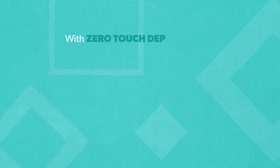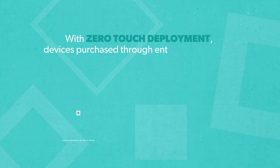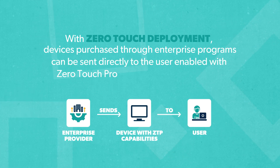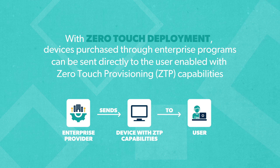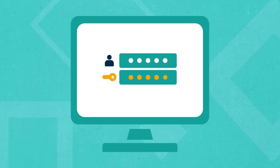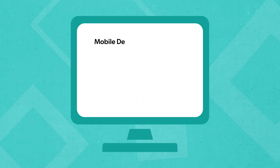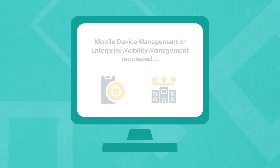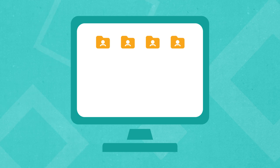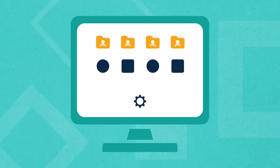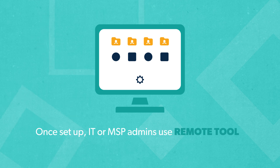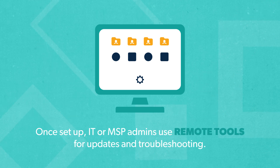With zero-touch deployment, devices purchased through enterprise programs can be sent directly to the user, enabled with zero-touch provisioning capabilities. The user simply signs online, which triggers their device to request mobile device management or enterprise mobility management. Then it receives the right user files, applications, and configuration settings automatically. Once set up, IT or MSP admins use remote tools for updates and troubleshooting.